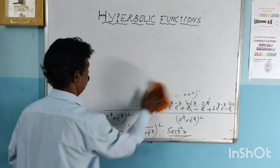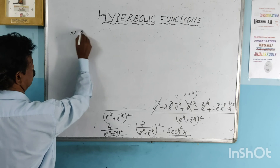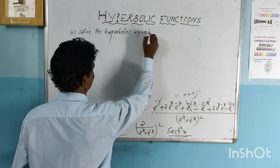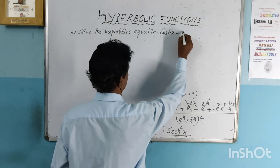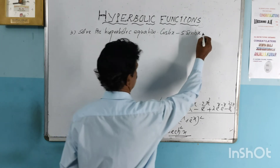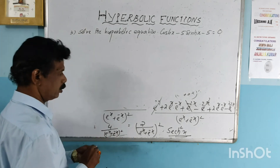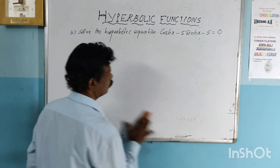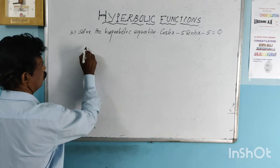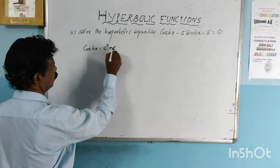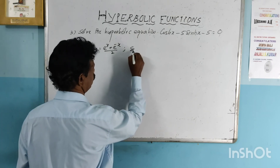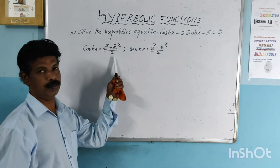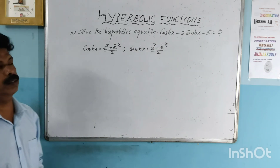Now solve the hyperbolic equation: cosh(x) minus 5 sinh(x) minus 5 equals 0. We know cosh(x) equals e raised to x plus e raised to minus x all over 2, and sinh(x) equals e raised to x minus e raised to minus x all over 2. Substituting these values: e raised to x plus e raised to minus x all over 2, minus 5 times e raised to x minus e raised to minus x all over 2, minus 5, equals 0.